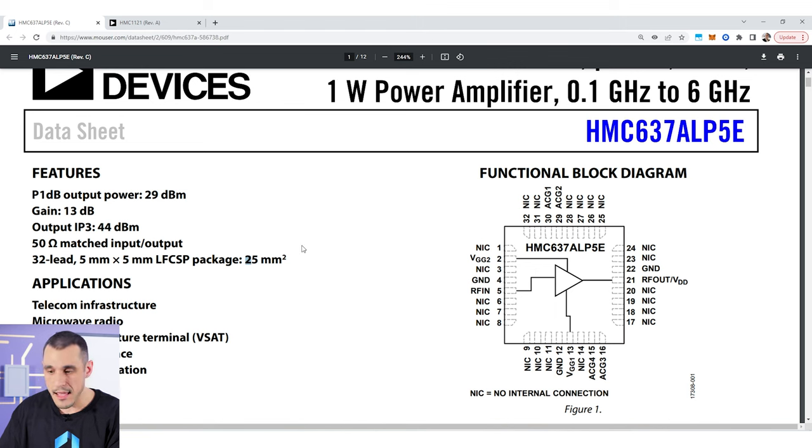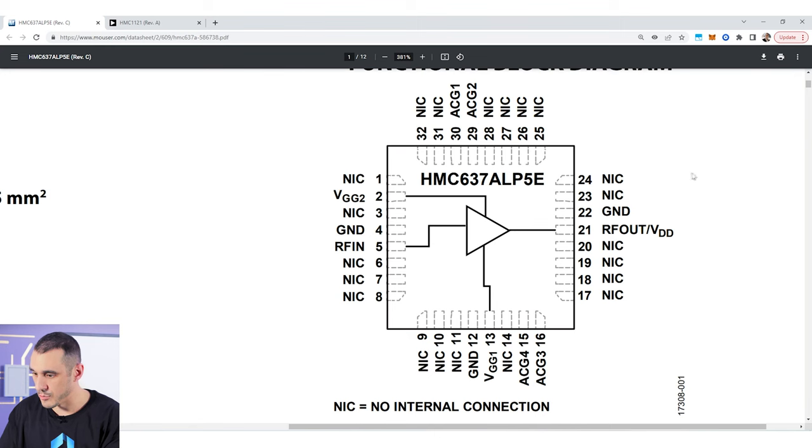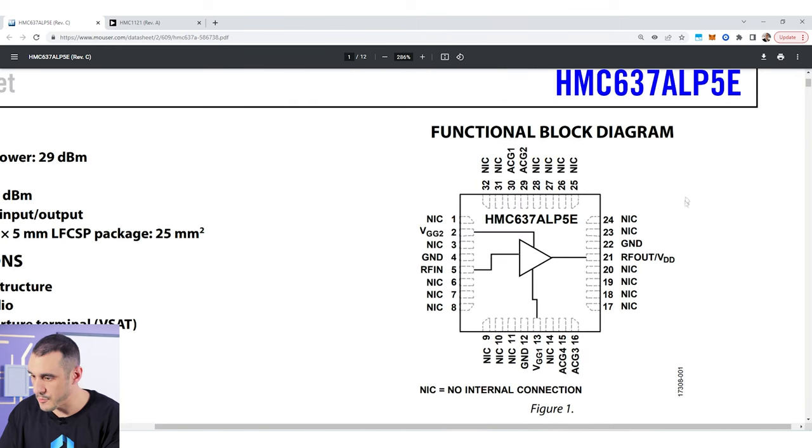And then here on the component outline in the functional block diagram you can see several different pins on this component. Now a lot of these are no connect pins. So here NIC means no internal connection. These are just for soldering the package. You can also see that we have a couple of different gate voltages here. These gate voltages need to be sequenced. And then here we have RF out and VDD ganged together on the same pin. How do you deal with this when your VDD and your RF out are ganged together on the same pin? Well what you need to do is use a bias T.